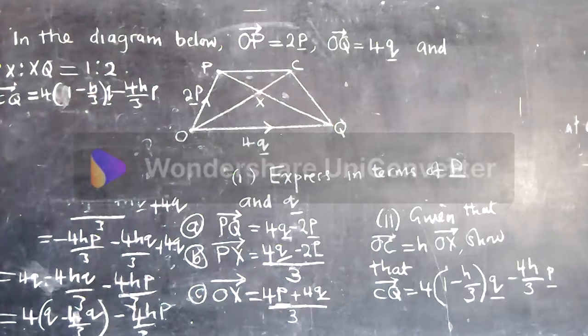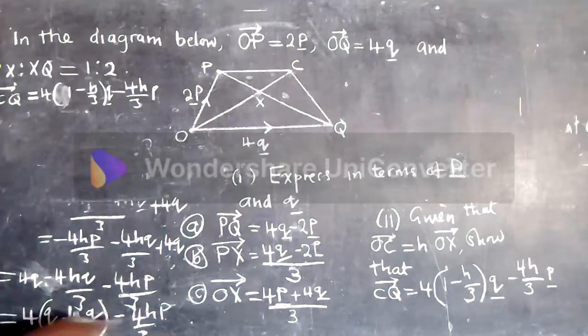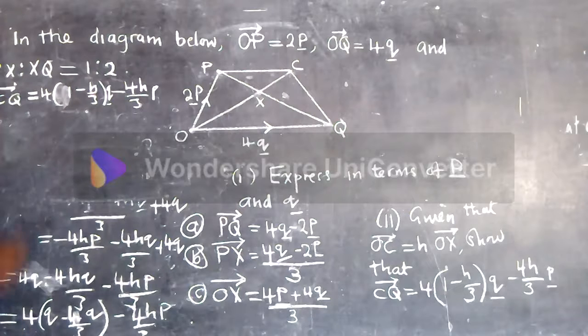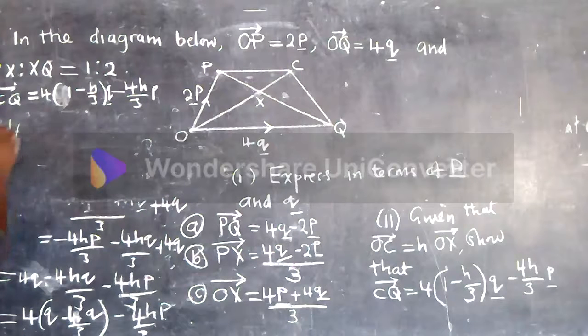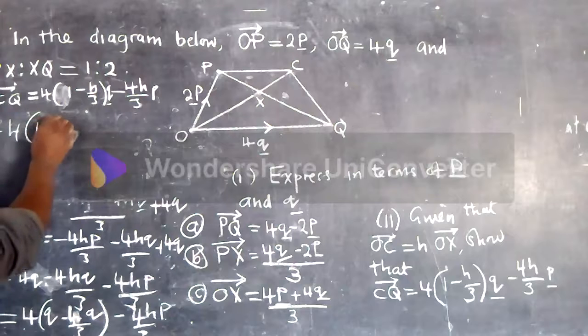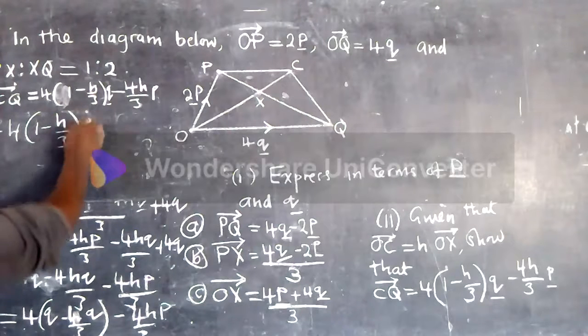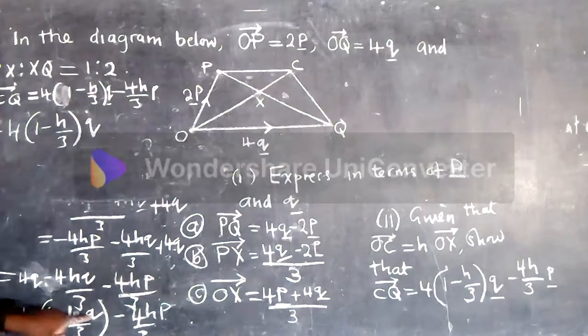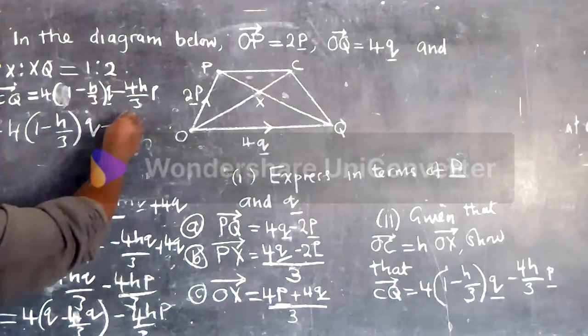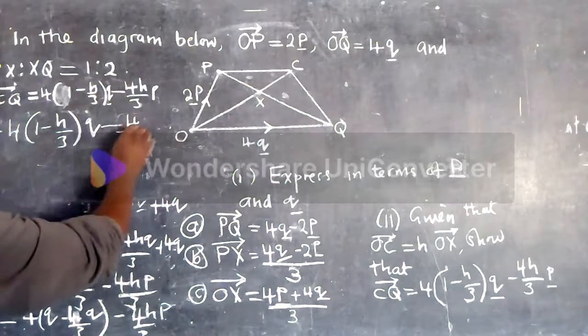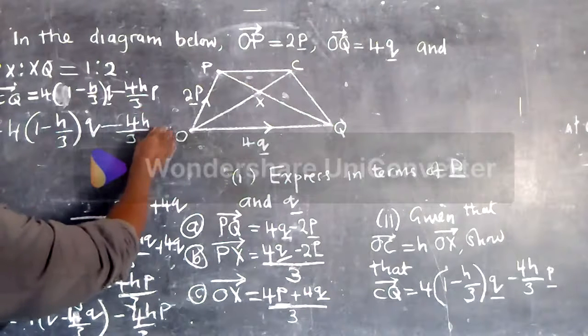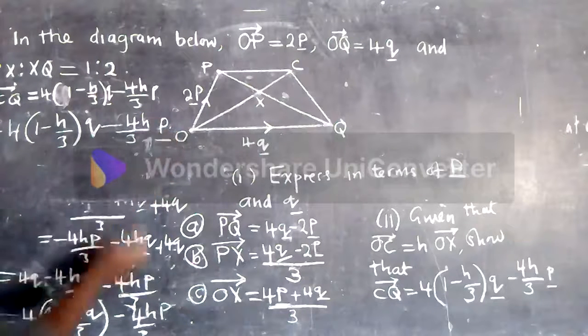From here move to here this way. So I'll factor out 4, 4 is outside then I'll factor out Q minus 4 over 3. 4 over 3, 2 is over here.